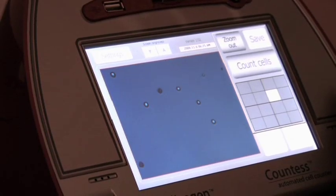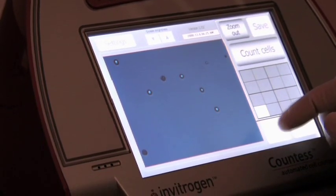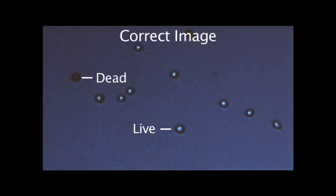Use the grid to navigate the slide and check the image in several fields. It's not necessary for the cells to be perfectly in focus. It's more important to adjust the image so that the instrument can distinguish between live and dead cells in the same way that you would distinguish these cells using a hemocytometer and a microscope. Live cells should exhibit a bright center and dark edges, while dead cells show a uniform blue color.